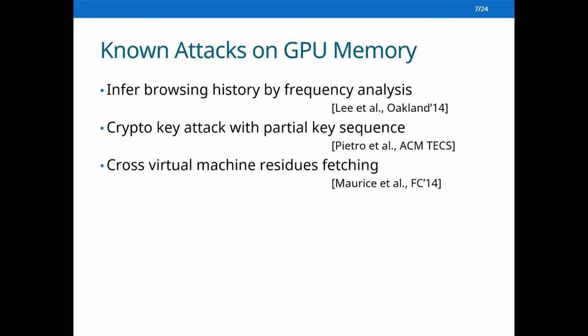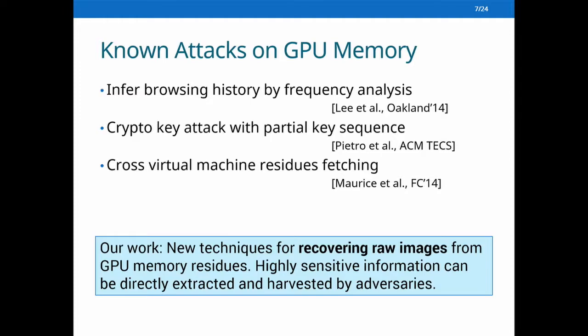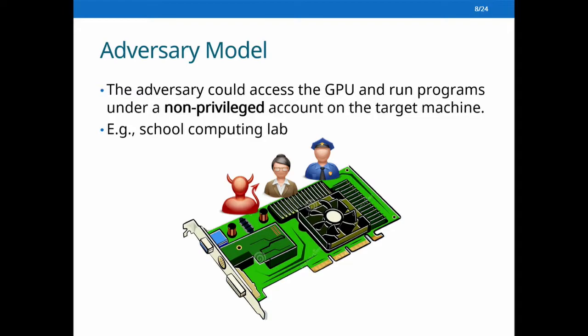However, that prior work usually relies on side-channel information and can only infer limited information. In this work, we report a major advance: we developed new techniques for recovering raw images from GPU memory residues, so that highly sensitive information can be directly extracted by an adversary. In our adversary model, we assume the adversary has obtained permission to access GPU memory and run programs under a non-privileged account on the target machine — sharing the same hardware with different accounts, such as in a school computing lab.